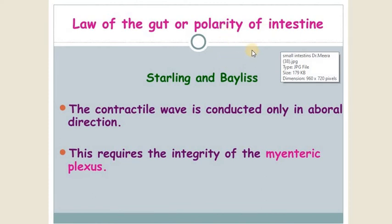It follows the law of gut or polarity of the intestine, the law of Starling and Bayliss. The contractile wave is conducted only in an ab-oral direction. It requires integrity of the myenteric plexus.